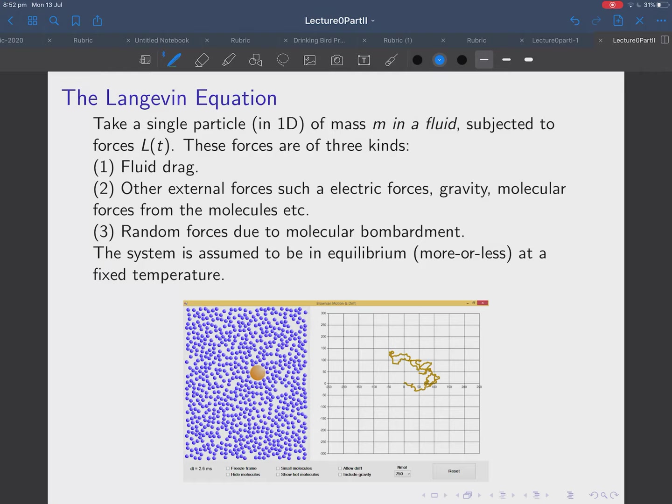So, what does the Langevin equation describe? Well, what we do is we're going to take a single particle, at least initially in 1D. You can generalize it to 3D very easily. This particle has mass M. It's in a fluid surrounded by other stuff, by water or alcohol or some other sort of fluid. And, we've still got one particle. Here it is. Surrounded by a fluid, which is this stuff here.